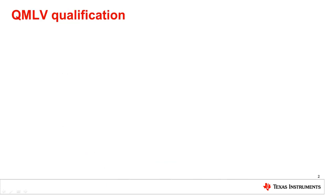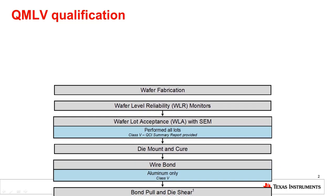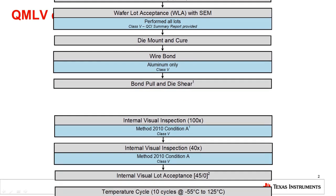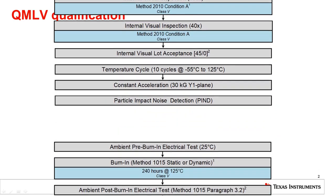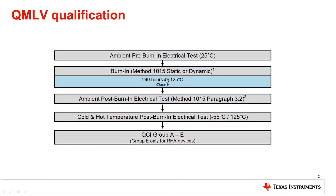Qualifying a device to QMLV is an extensive process, as you can see here, including things like wafer lot acceptance testing, wire bond, bond pull, die shear testing, internal visual inspection to multiple degrees, temperature cycling, pre-burn-in electrical testing, burn-in for 240 hours, as well as ambient post-burn-in testing and testing over temperature.